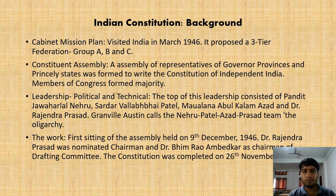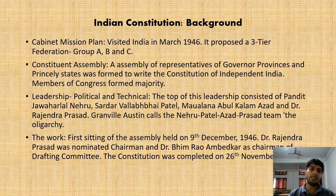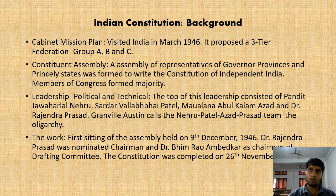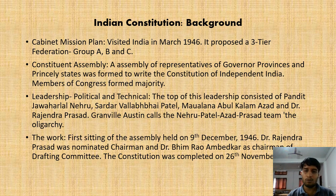The Cabinet Mission Plan proposed a three-tier federation — Group A, Group B, and Group C. These federations were divided on the basis of demography. In Group A, most of the provinces which had a Hindu majority were placed — the Central Provinces, present-day Uttar Pradesh, Madhya Pradesh, South Indian states — the non-princely or British provinces were kept in Group A. For Group B, we had more Muslim-majority provinces.